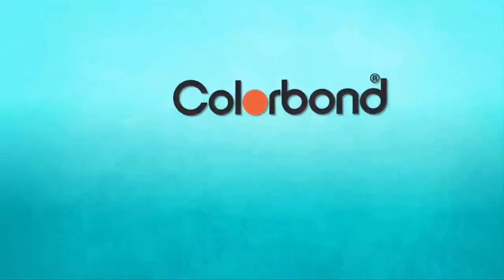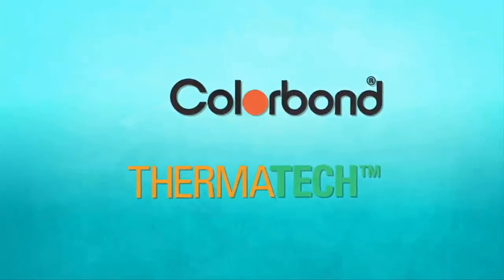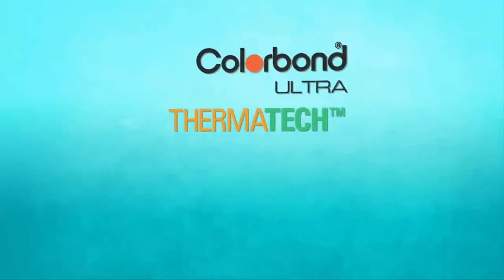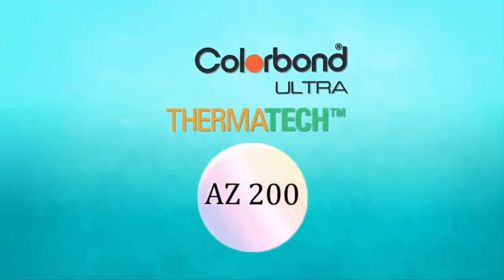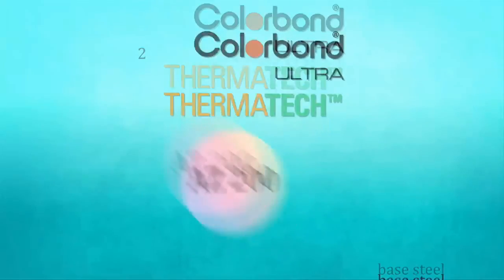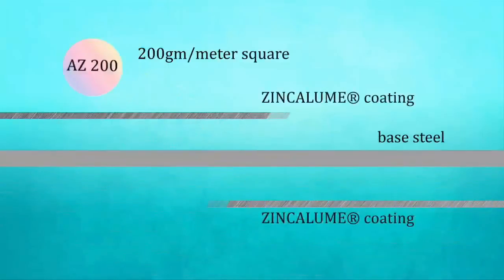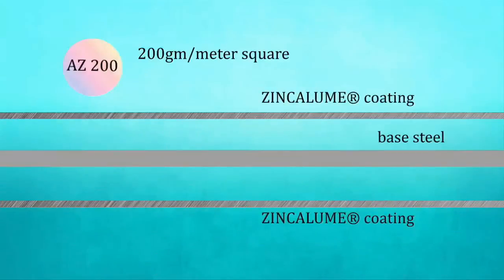What's more, the new Colorbond steel with Thermatec technology now comes in the ultra range which is stronger and more durable with AZ-200 coatings improved from conventional AZ-150. This means you have 200 grams of aluminum and zinc coating per meter square on both sides of the steel...